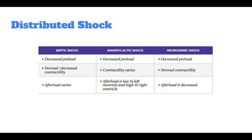Distributive shock is a condition in which the majority of blood is inappropriately distributed in the vasculature. A common way to conceptualize distributive shock is as a condition in which the vasculature has relaxed and dilated to the point of inadequacy. The arterial blood supply needs to maintain a certain tension in order to maintain blood pressure, and the venous system must maintain tension as well so as not to retain too much of the total blood supply. Distributive shock is most commonly caused by sepsis, anaphylaxis, or a neurological problem, all of which cause vascular dilation or loss of blood vessel tone.